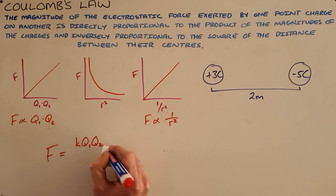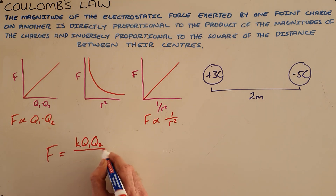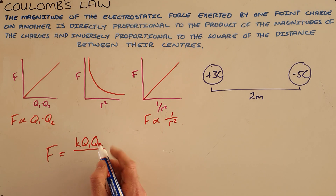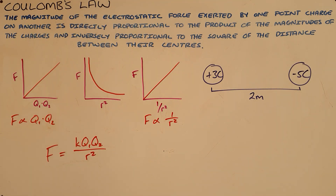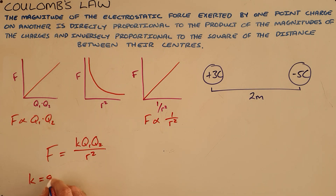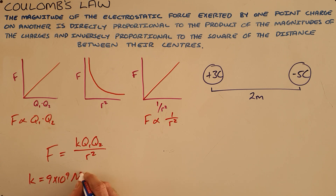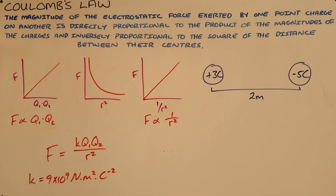The force between two charged objects is equal to the product of their charges multiplied by K, divided by the distance between their centers squared. K is a universal constant of nine times ten to the nine Newton meters squared per Coulomb squared.